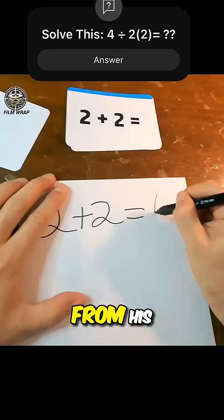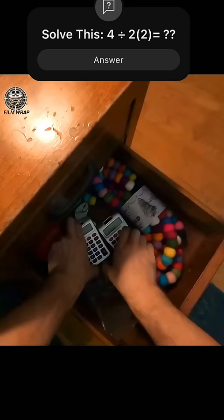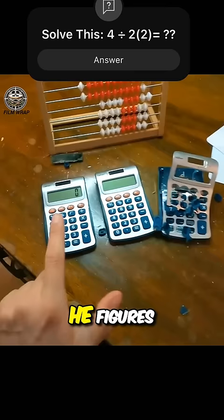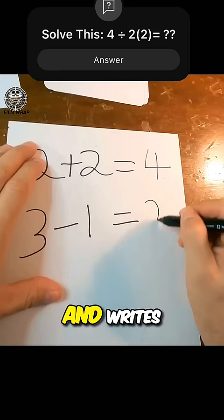Next is 3 minus 1. He pulls out a calculator, but he doesn't use it to calculate. Instead, he brings out two more calculators and smashes one with a hammer. He figures out there are now only two calculators left and writes down his answer.